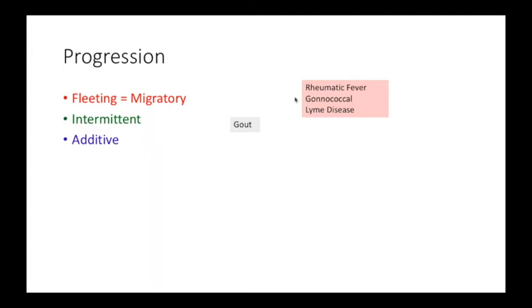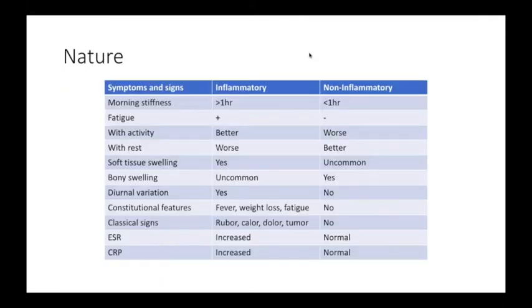We often get confused on how to differentiate between an inflammatory versus a non-inflammatory arthritis. An inflammatory arthritis usually has morning stiffness greater than one hour, is associated with fatigue, gets better with activity, worsens with rest, and has soft tissue swelling. Bony swellings would be uncommon. There are diurnal variations in pain, and constitutional features such as fever, weight loss, and fatigue are associated.